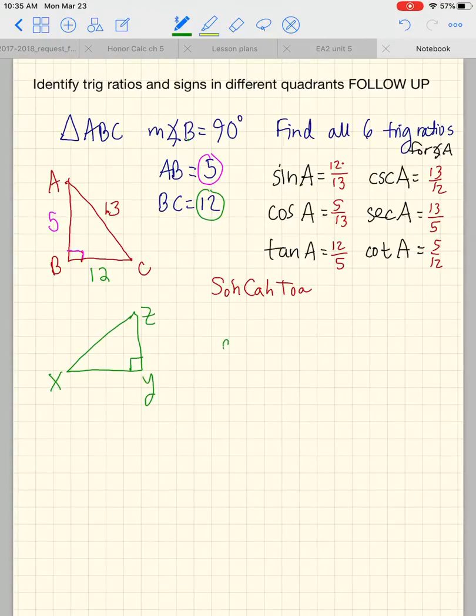And let's say I want to find the cosecant of angle x. So the first thing you have to know is that cosecant is the reciprocal of which one of these? Sine, cosine, or tangent?